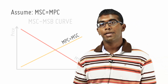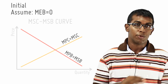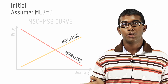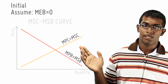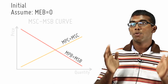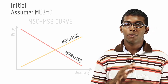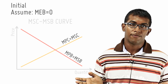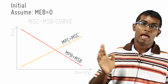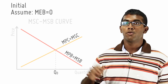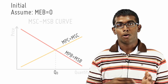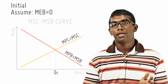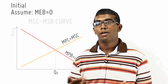Under MPB and MSB, let's make the initial assumption — without the consideration of the external benefit — that MPB equals MSB. That's what I would be seeing as a private individual; I'm not seeing the external benefit. And under these conditions, I would consume at Q0, where my MPB equals to MPC.